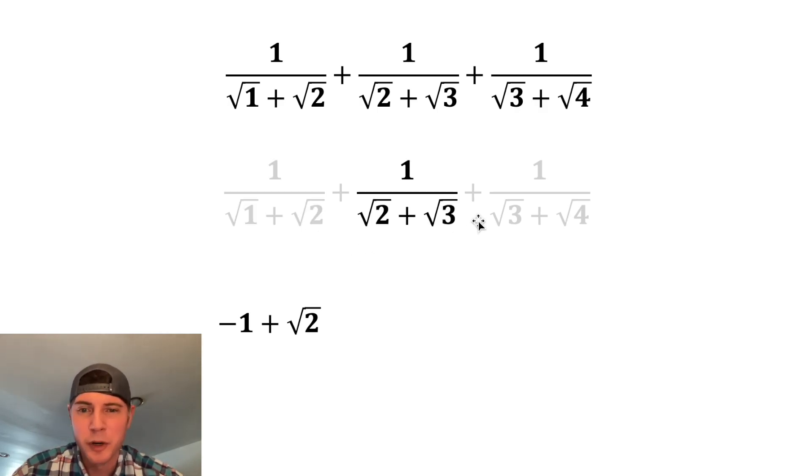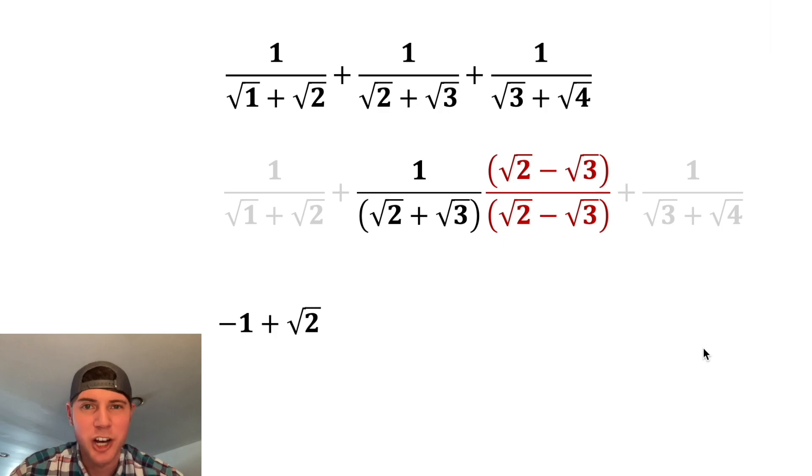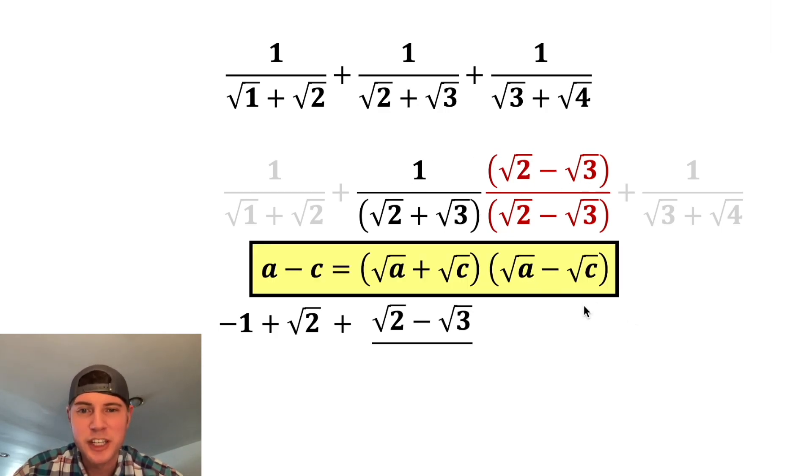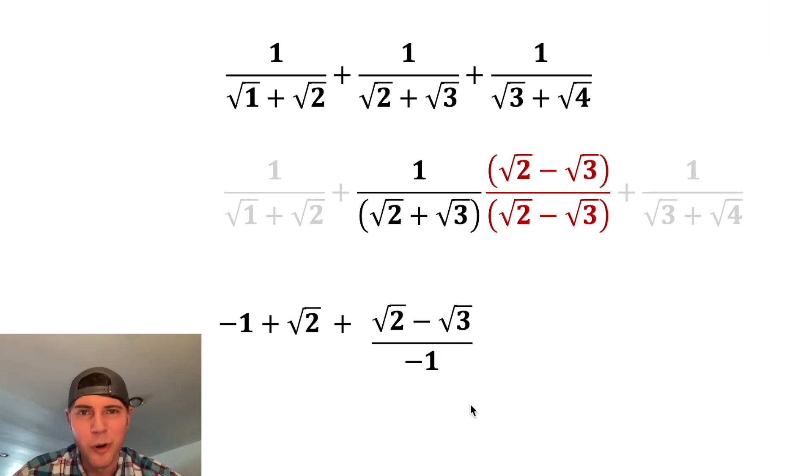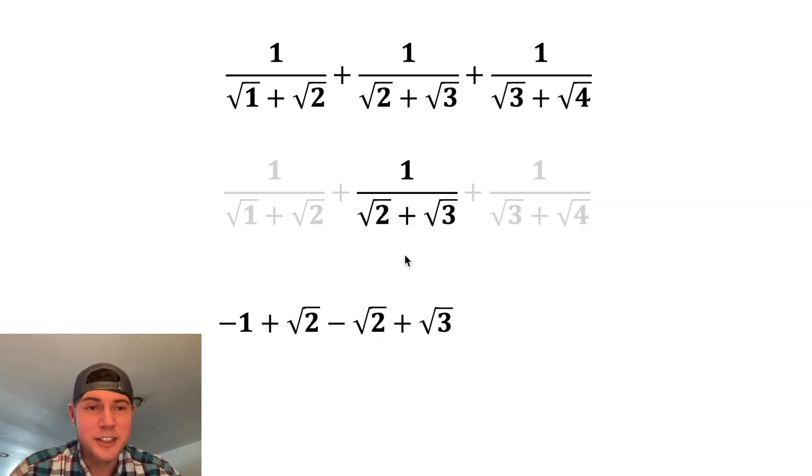So now let's focus on this next fraction. We're going to do the same thing, multiply top and bottom by the conjugate. On top, we're just going to have the root 2 minus root 3. And on bottom, we're going to use these notes again. But in this case, a is 2 and c is 3. So on bottom, we're going to have the a minus c, which is 2 minus 3. And then 2 minus 3 is equal to negative 1. And we can divide both these top terms by negative 1, making this first one negative and the second one positive. So we have negative root 2 plus root 3. And we can smoosh these together. And that takes care of this second fraction.